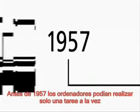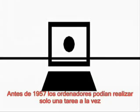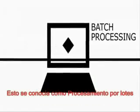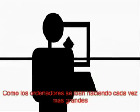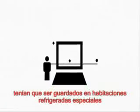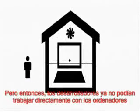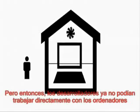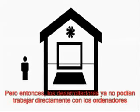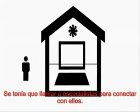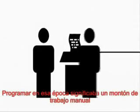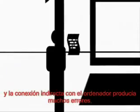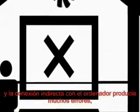Before 1957, computers only worked on one task at a time — this is called batch processing. Of course, this was quite ineffective. With computers getting bigger and bigger, they had to be stored in special cooled rooms, so developers couldn't work directly on the computers anymore. Specialists had to be called in to connect them. Programming at that time meant a lot of manual work, and the indirect connection to the computers led to a lot of bugs.